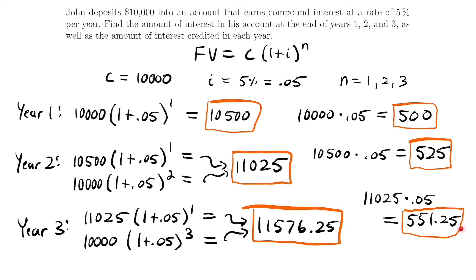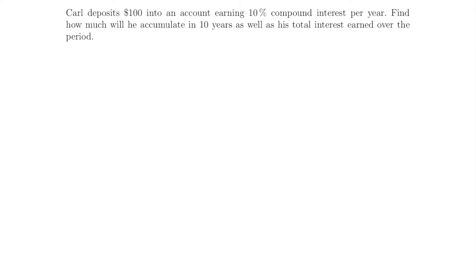So we completely answered this question — we found the amount in the account at the end of years one, two, and three, and we found how much interest was earned in each of those years. Next, let's look at this question: Carl deposits $100 into an account earning 10% compound interest per year. Find how much he will accumulate in 10 years, as well as his total interest earned over that period.